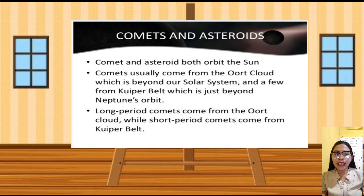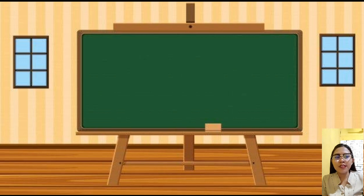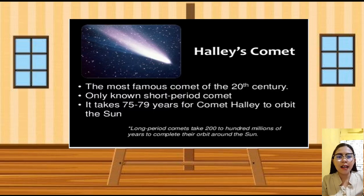Long-period comets came from the Oort cloud, while the short-period comets come from the Kuiper Belt. One of the famous comets of the 20th century is Halley's Comet,